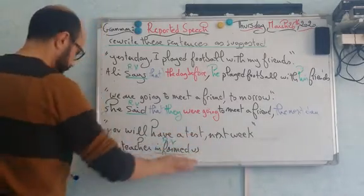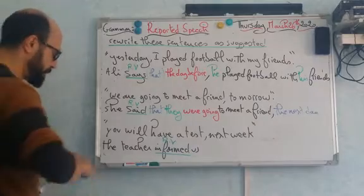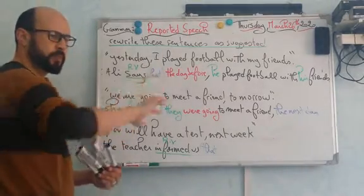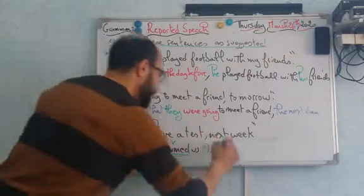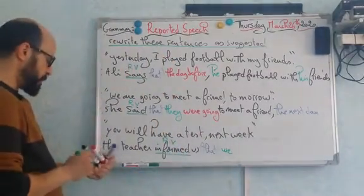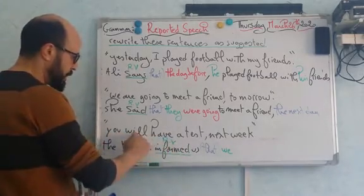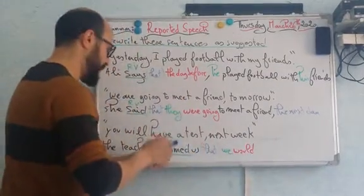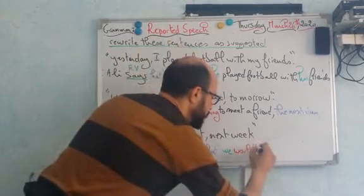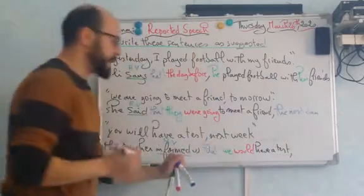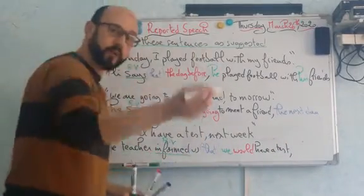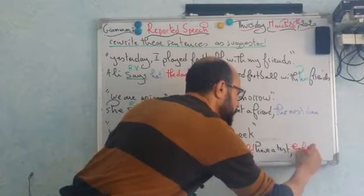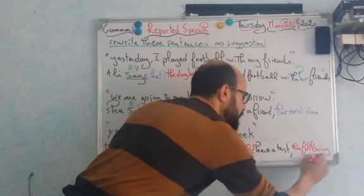Third example: 'You will have a test next week.' The teacher informed us. 'You' refers to all of us, so it becomes 'we.' The reporting verb 'informed' is in the past, so we change 'will' to 'would.' 'Next week' — two possibilities: 'the following week' or 'the next week.' So: the teacher informed us that we would have a test the following week.